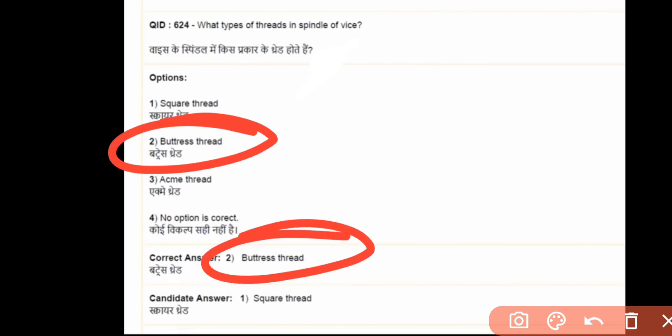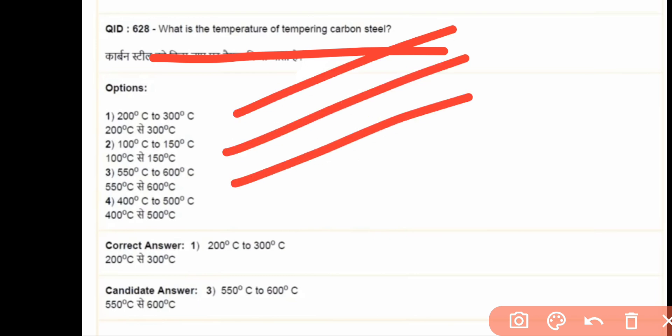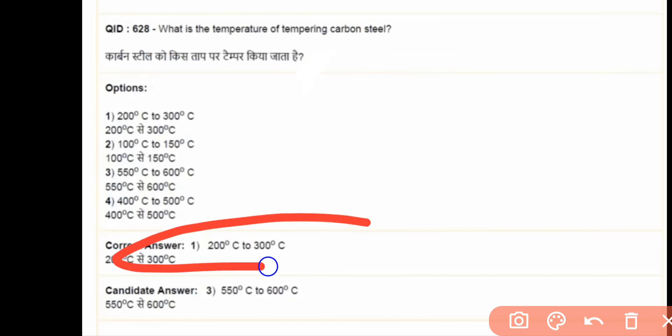The next question is what is the temperature of tempering carbon steel? 200 to 300 degree Celsius, 100 to 150, 550 to 600, 400 degree to 500 degree Celsius. The answer is 200 degree to 300 degree Celsius.